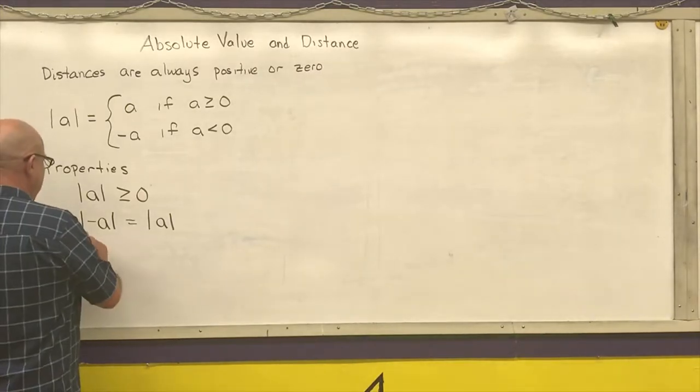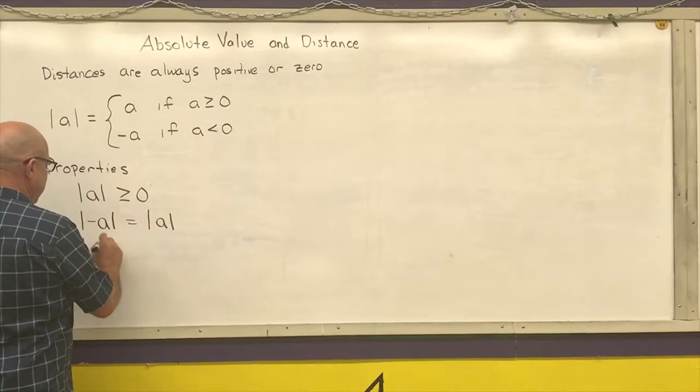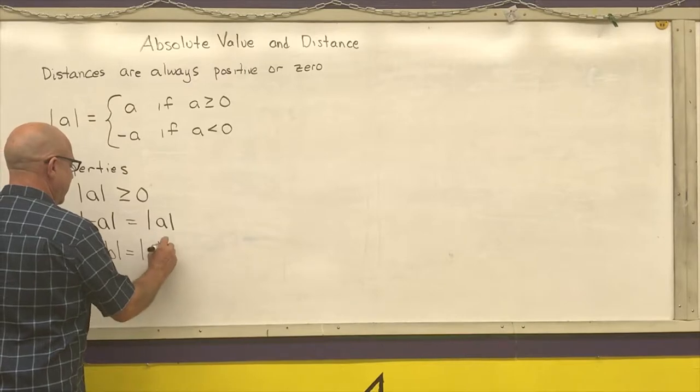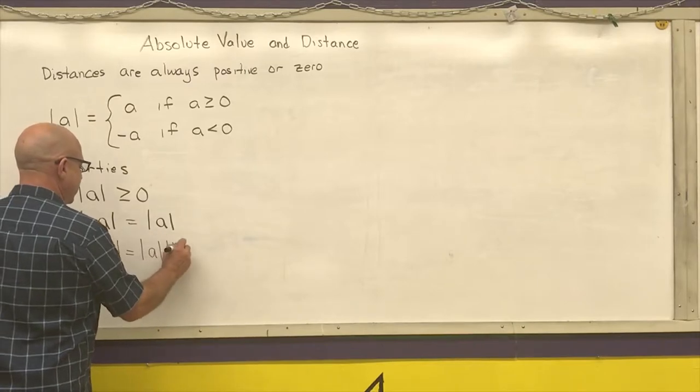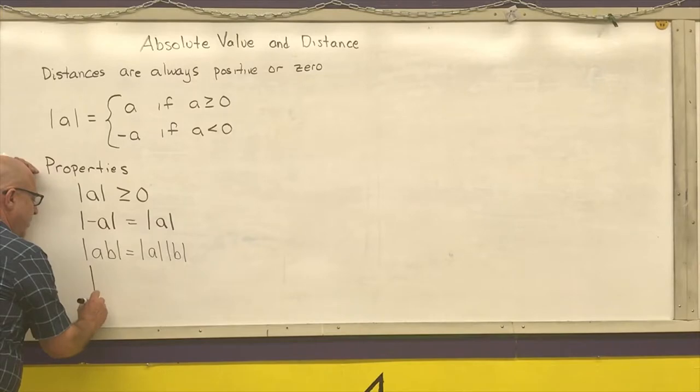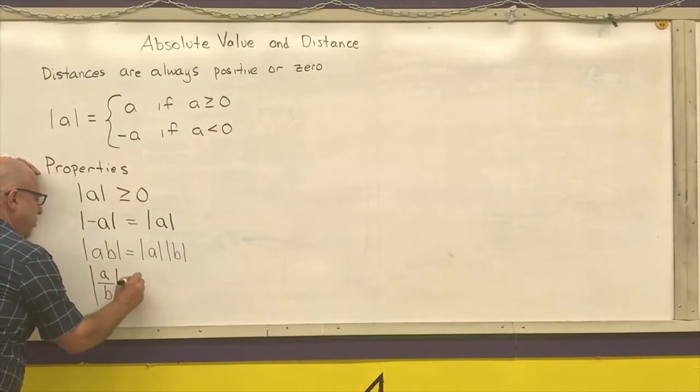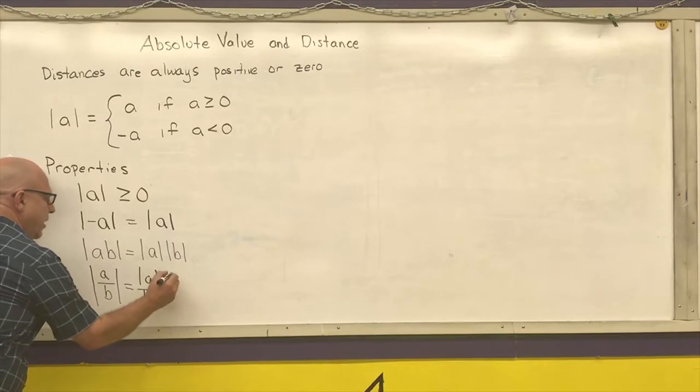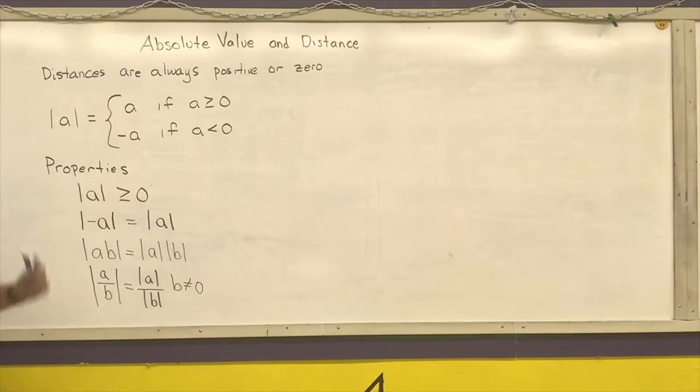Third property: the absolute value of a product is equal to the product of the absolute values. And the last property is that the absolute value of a quotient is equal to the quotient of the absolute values as long as the denominator is not equal to zero.